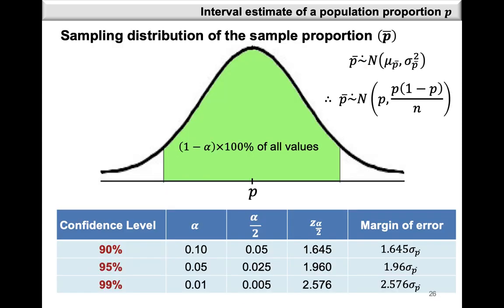From the graph we can see that the shaded area is where we expect to find our value of P with a certain confidence level. The lower limit of this area is P-bar minus Z alpha over 2 times sigma P-bar. These Z values are the same values encountered in the first video for the three commonly used confidence levels. Keep in mind that you should also be able to find the Z value for any other confidence level.